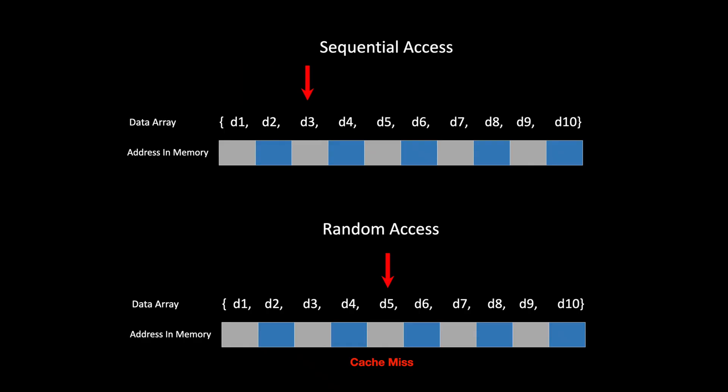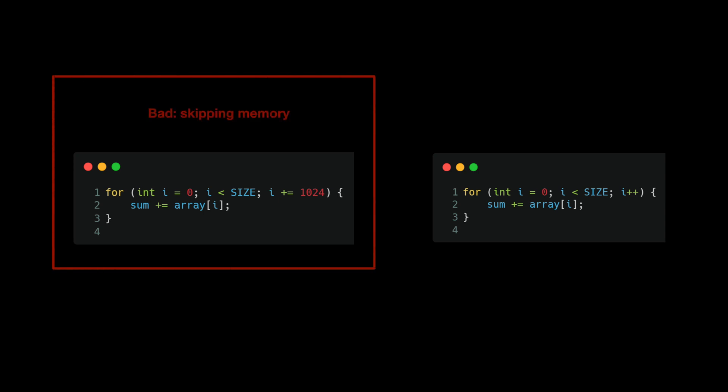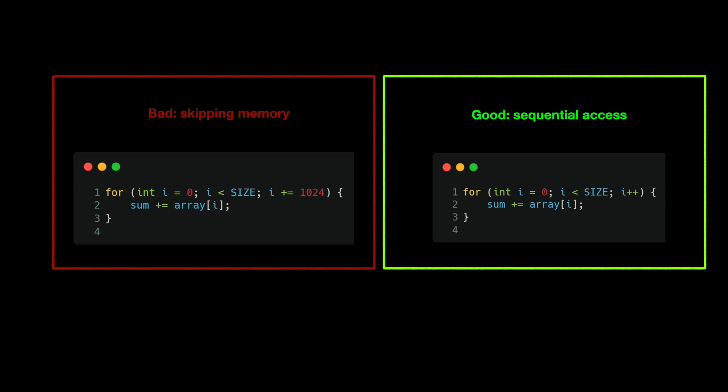The more cache misses your program has, the slower it will be. To fix this, we need cache optimization. The first technique is using sequential memory access and avoiding stride access. As we know, accessing data sequentially is much faster than accessing it randomly, because of CPU prefetching which loads adjacent memory locations into the cache. Comparing two for-loop examples: one skips memory locations causing cache misses, while the other goes through data sequentially, helping the CPU use prefetched data to process it faster.